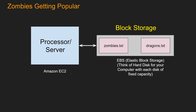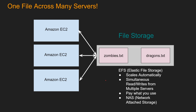Going back to EBS, or Elastic Block Storage — to process data, remember, we had to attach EC2. But one EBS can be attached to only one EC2. But what if your zombie books are getting very popular and multiple processes want to read it and update it? That's not possible with EBS — so that's why file storage came into play. One file can be accessed through multiple servers. The file storage in AWS is known as EFS, or Elastic File Storage. It scales automatically — if servers add files, it expands; if files reduce, it shrinks. It supports simultaneous read-writes from multiple servers, you pay for what you use, and it is associated with NAS, or network attached storage.